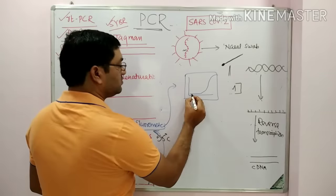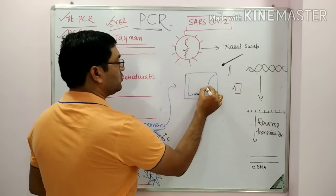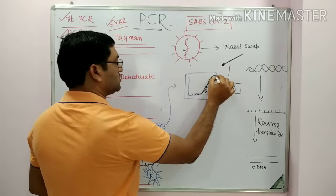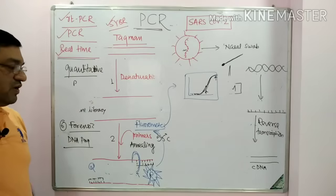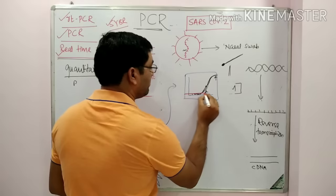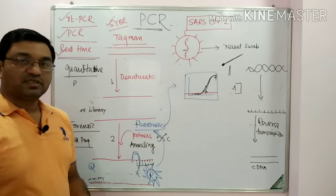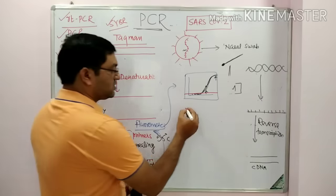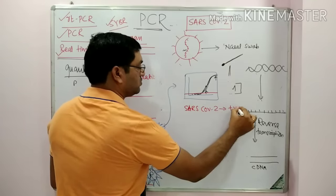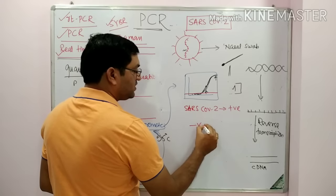These are the initial cycles — first, second, third, fourth, fifth — and then there is exponential growth, followed by a plateau. When the fluorescence signal goes beyond a certain threshold, it is labeled as SARS-CoV-2 positive. When it remains below that threshold, it is labeled as negative.